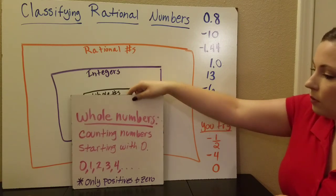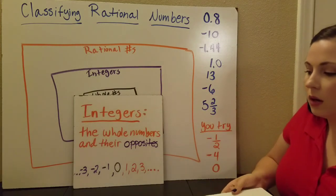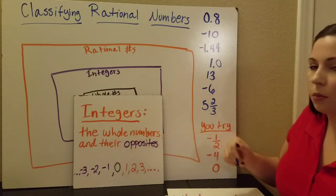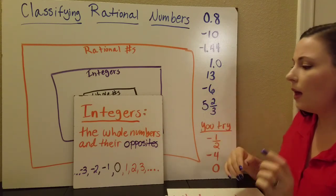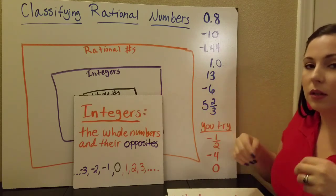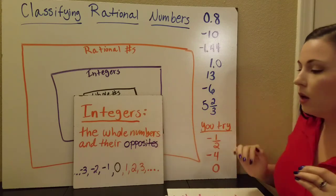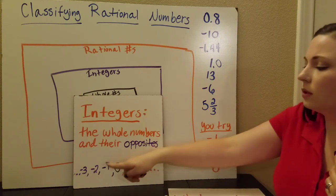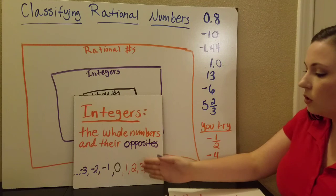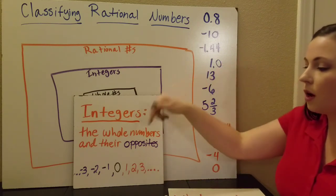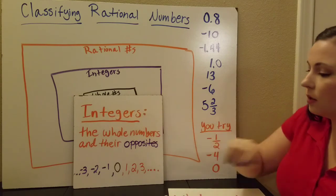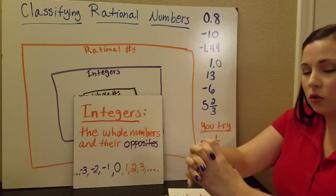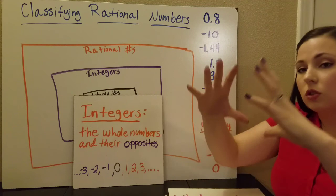Whole numbers is your smallest group. The next group, called integers, is the next largest group. Your integers are the whole numbers — zero, one, two, three, four, and so on — and their opposites. Opposites means the same number but with a different sign, so the opposite of positive one is negative one. Your integers include all those positive numbers but also their negatives: negative one, negative two, negative three, and so on.